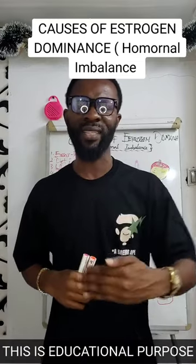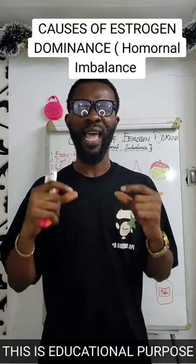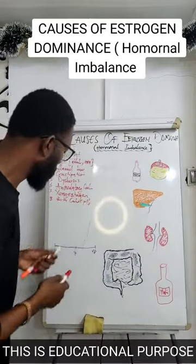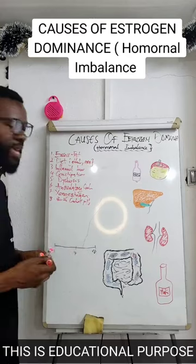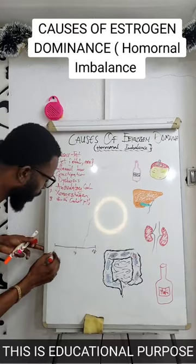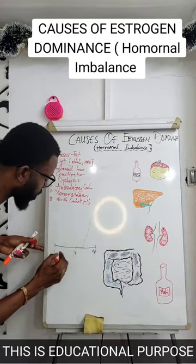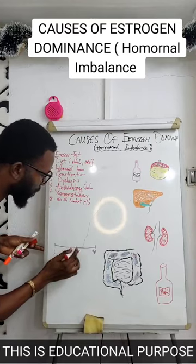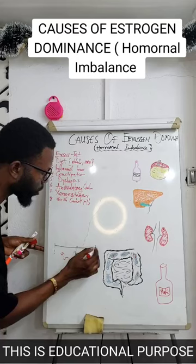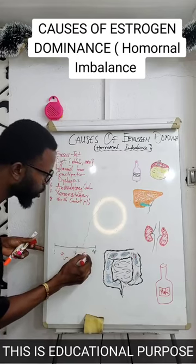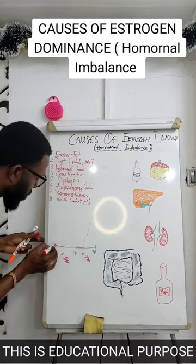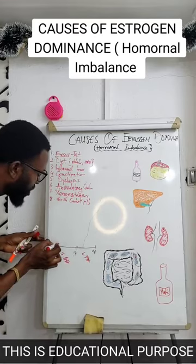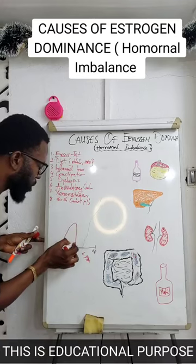Now let's look at some of the causes of this estrogen dominance. From day 1 to 14, we call it the follicular phase, and from day 15 to 28, we call it the luteal phase. You can see that from day 1 to 14, estrogen goes up and then it falls.